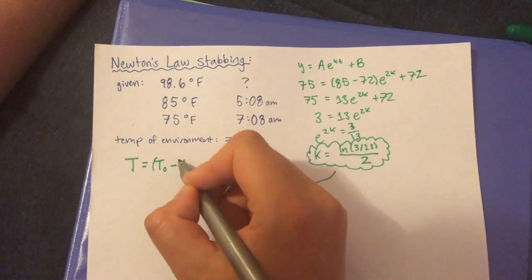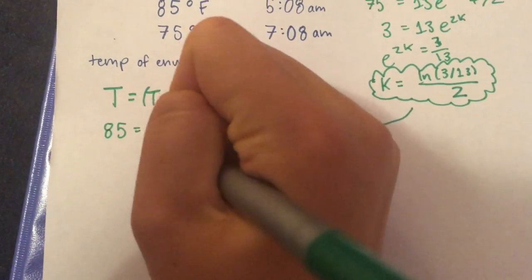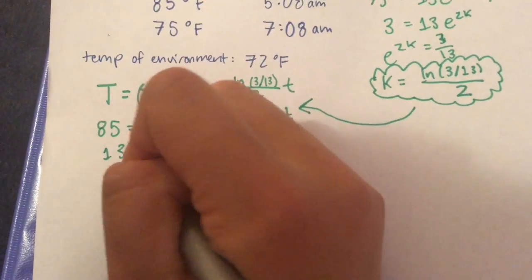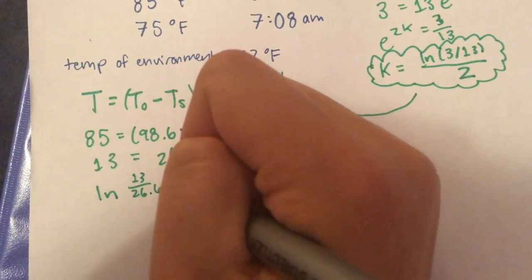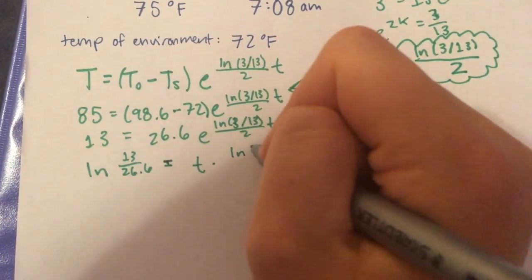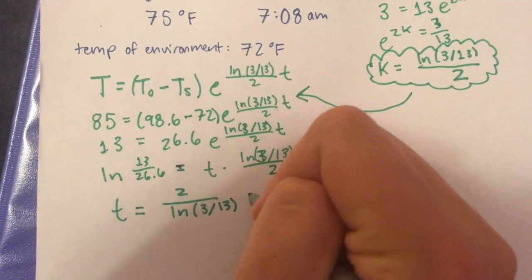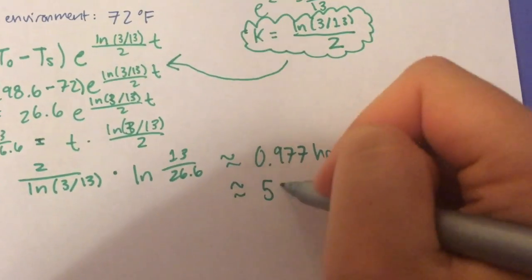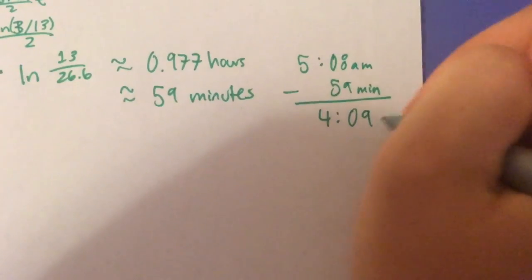Now we're going to plug this k value into t equals the temperature of the original times the temperature of the surrounding times e to the k that we just found times t. If we plug in all the values that we know, the only variable left to solve for is t, which is time, which we can simplify down to be about 59 minutes. Subtract that from 5:08 a.m. when the body was found, and we have 4:09 a.m.